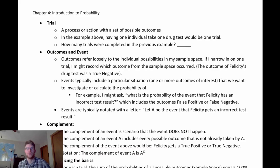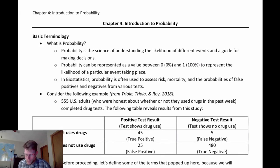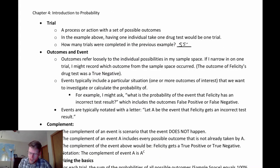A trial is a process or action with a set of possible outcomes. In the drug test example, having an individual take a drug test would be considered one trial — one measurement, one data collection opportunity. Similarly, if I'm doing a survey, talking to somebody and asking a question is like a trial — one singular data collection event. So how many trials were completed in the drug testing example? We had 555 people, so that means we had 555 trials.